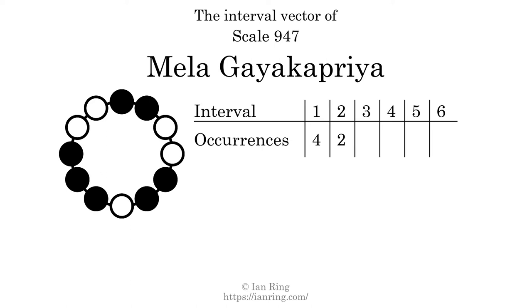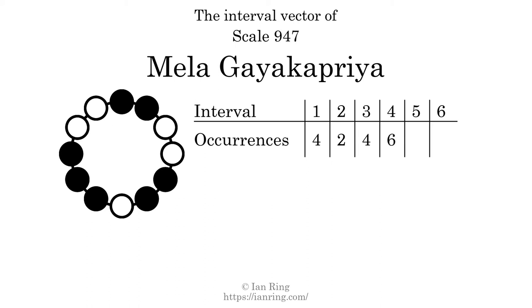There are two intervals with the size of two semitones, here and here. There are four intervals with the size of three semitones, here, here, here, and here. There are six intervals with the size of four semitones, here, here, here, here, here, and here.